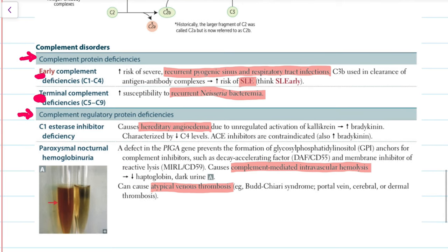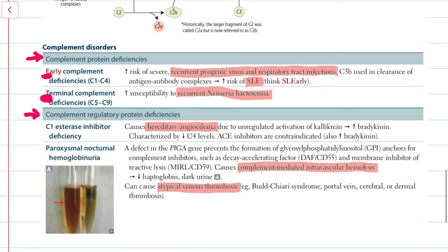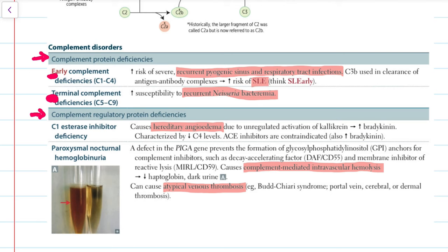Complement regulatory protein deficiency includes C1 esterase inhibitor deficiency, which causes hereditary angioedema due to unregulated activation of kallikrein, which increases bradykinin. That is characterized by decreased C4 levels.